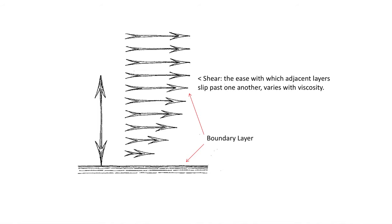In physics we can define something called shear. Shear is the ease with which adjacent layers of liquid slip past one another. As a liquid passes across a surface it slows down, causing layers above the surface within the liquid to slow as well, and hence produces shear. The effective layer of fluid is called the boundary layer, which varies due to the viscosity of the liquid.